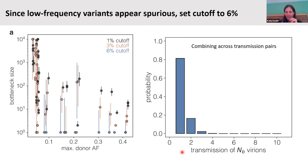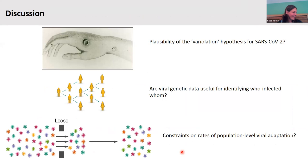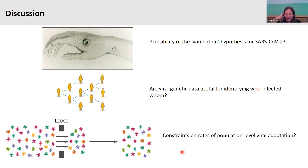We can discuss these results in the context of the plausibility of the variolation hypothesis, whether we should give up trying to identify who infected whom from genetic variation, and also constraints on viral adaptation. And I think that's all I've got.